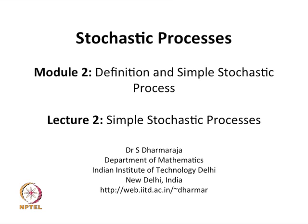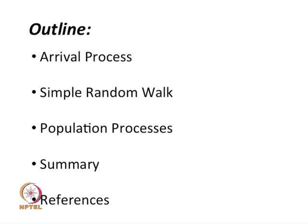This is Module 2: Definition and Simple Stochastic Processes, and today is Lecture 2 on simple stochastic processes. In Lecture 1 we saw the definition and classification of a stochastic process based on time space and parameter space, and gave a few simple examples. In this lecture we will discuss: the Bernoulli process, the Poisson process, the simple random walk, a population/branching process, and the Gaussian process.